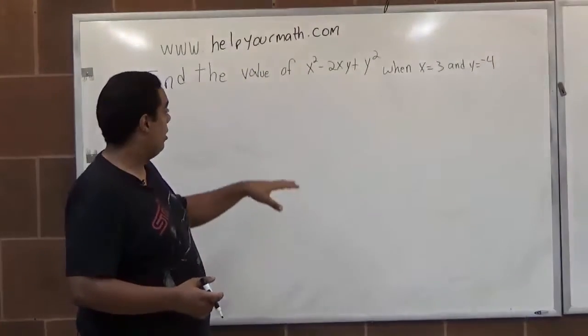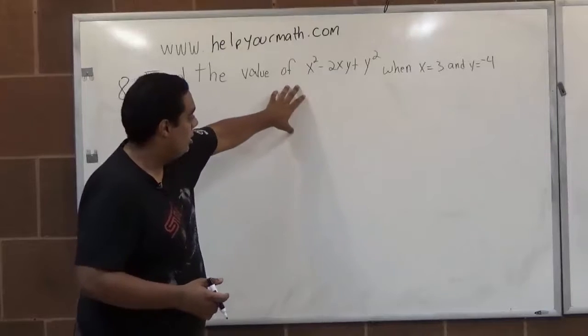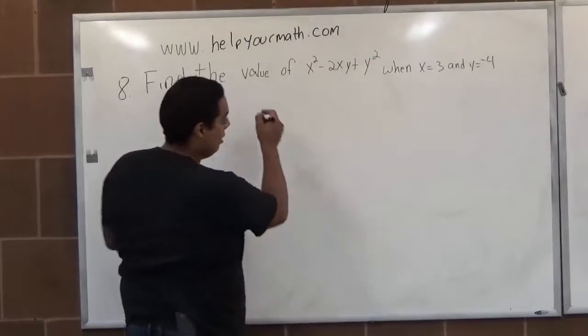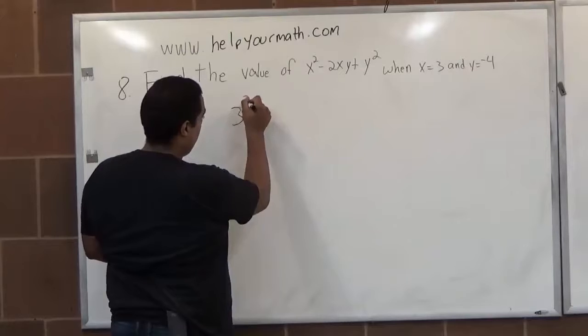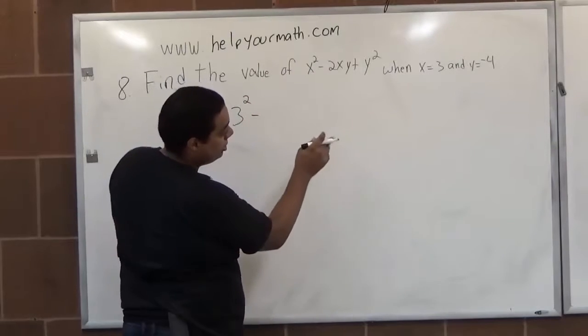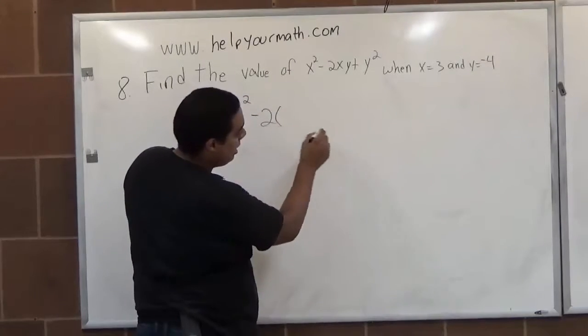So all we have to do is plug in our x and y values into this equation. So x squared, x equals 3, is 3 squared minus 2 times x, which is 3,